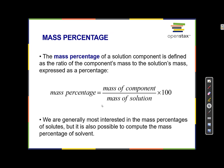The mass percentage of a solution is defined as the ratio of the component's mass to the solution's mass. So the mass percentage is the mass of a component, or the mass of a solute, divided by the mass of the solution, times one hundred — making it a percentage, so we put the percent sign at the end.